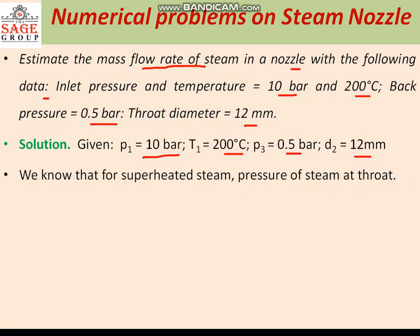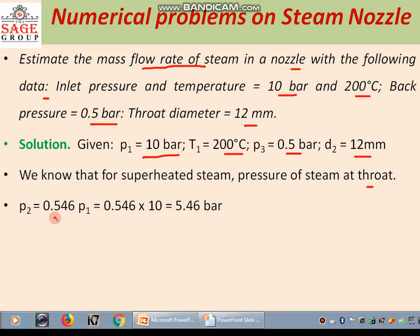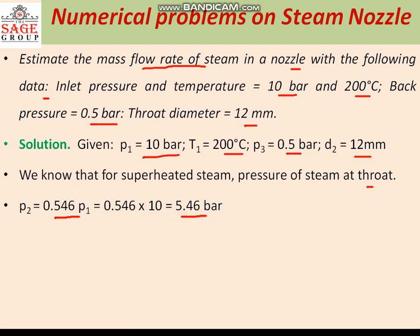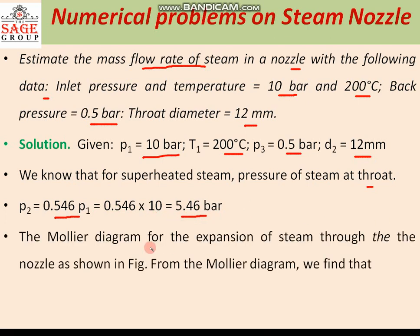For superheated steam, pressure at the throat can be written as P2 equal to 0.546 into P1, that is 0.546 into 10, giving 5.46 bar. This is the critical pressure at the throat.